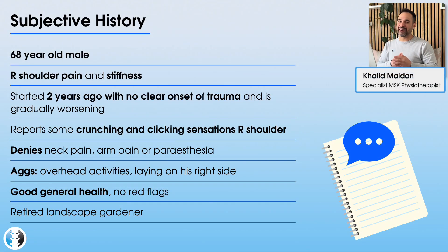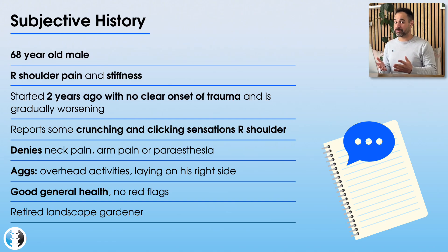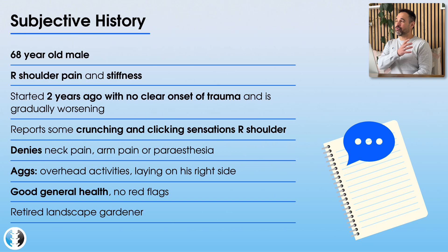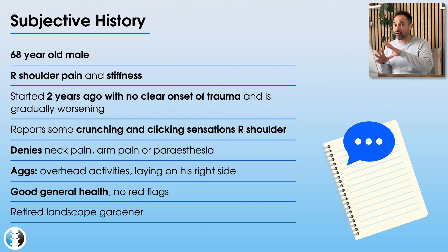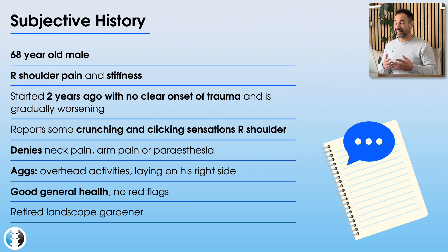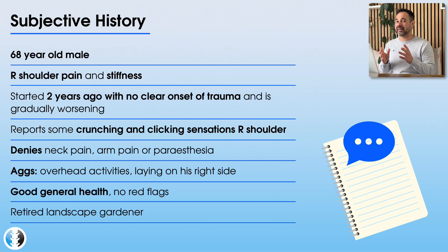Khalid here. Welcome back to Clinical Physio and another case study. This patient has shoulder pain. They are a 68-year-old male patient with right shoulder pain and stiffness. Their symptoms started around two years ago and have gradually got worse over time. They're not really sure why their symptoms started — there was no clear onset of trauma or anything like that.